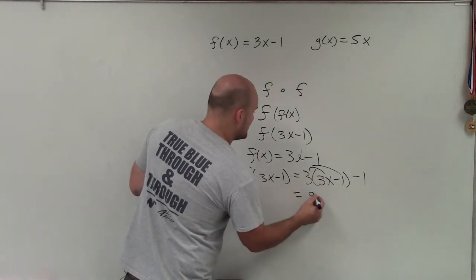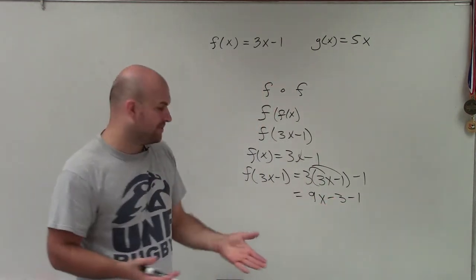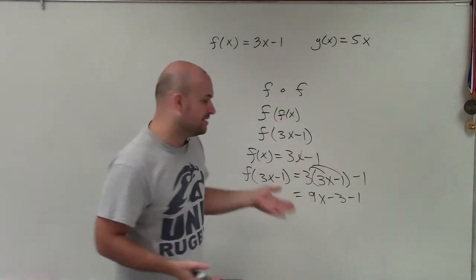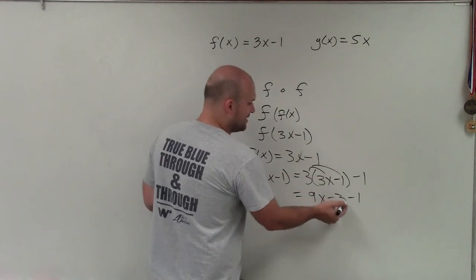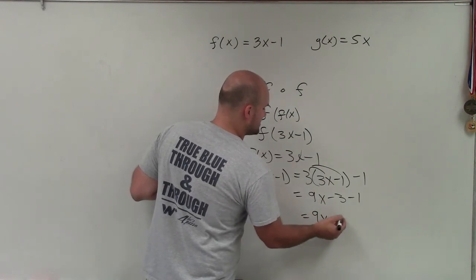So that's going to give me 9x minus 3 minus 1. Now, once I've completed distributive property, now I've gotten rid of parentheses. I don't need them. So negative 3 minus 1 is going to be a negative 4. So therefore, I have 9x minus 4.